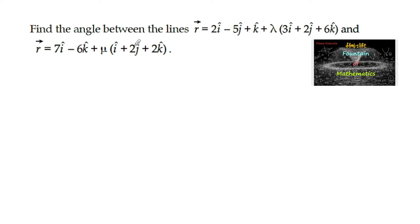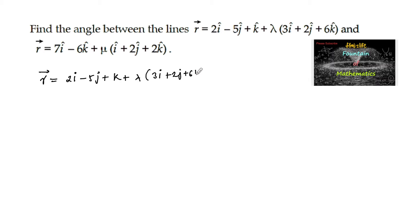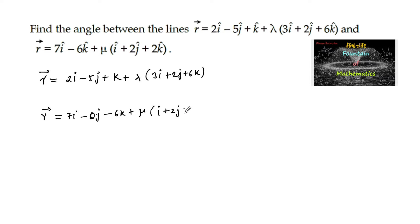Find the angle between the lines: vector r is equal to 2i minus 5j plus k plus lambda times of 3i plus 2j plus 6k, and r is equal to 7i minus 6k plus mu times of i plus 2j plus 2k.